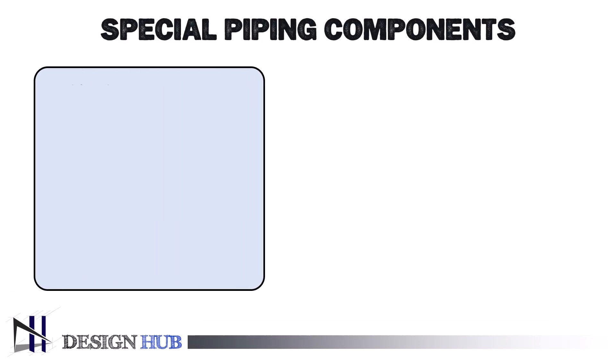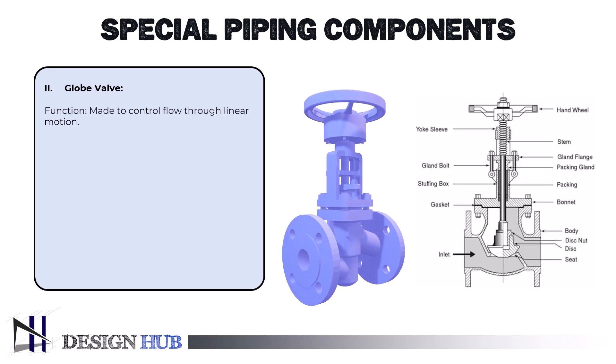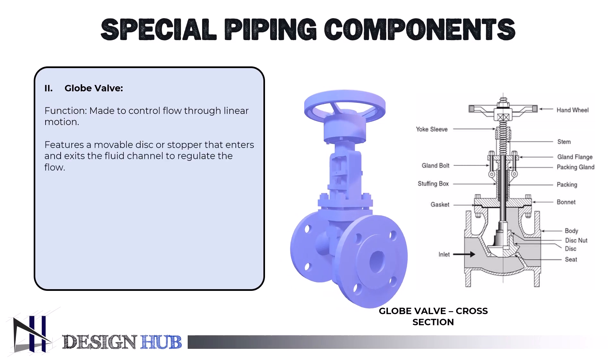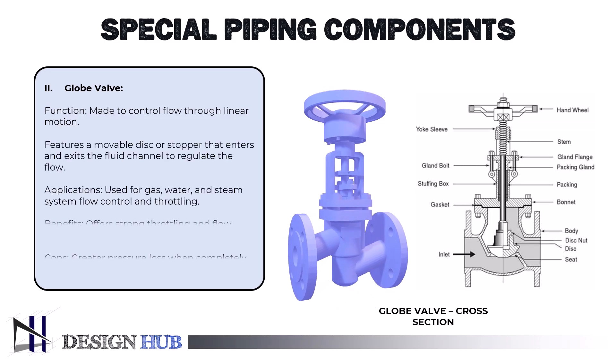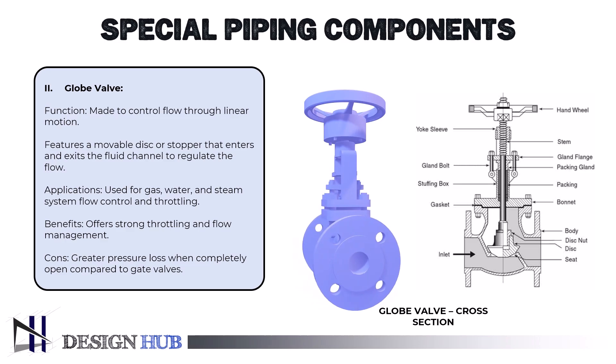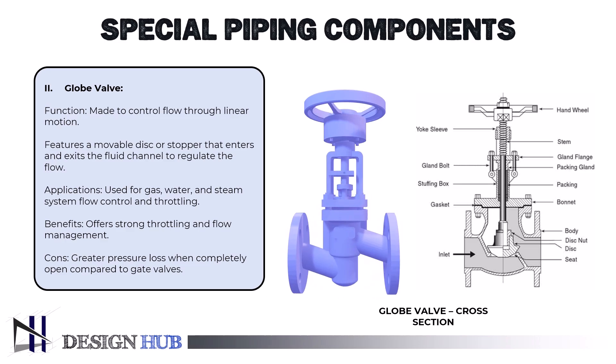Next, let's see what a globe valve is. As opposed to a ball valve, it is a kind of valve used to control flow in a pipeline. It has a stationary ring seat housed in a usually spherical body, together with a movable plug or disc element. Because of their spherical body form and internal baffle dividing their two halves, globe valves get their name. A movable plug can be placed into an opening to create a seat to seal or shut the valve. Globe valves have a plug attached to a stem that is turned by a handwheel in manual valves to control the screw movement.